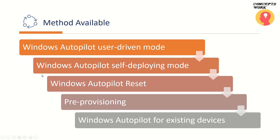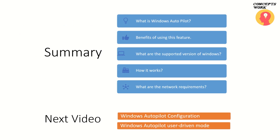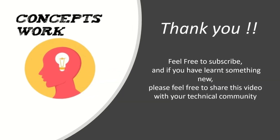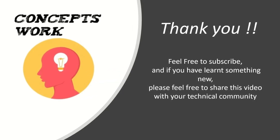That covers the theoretical part of how Windows Autopilot works. To summarize: we discussed what Windows Autopilot is, its benefits, supported Windows versions, how it works, and basic network requirements. In the next video we will cover Windows Autopilot configuration, focusing on User Driven Mode. If this channel is helping you learn something new, please subscribe and share with your technical community. Thank you for your time.